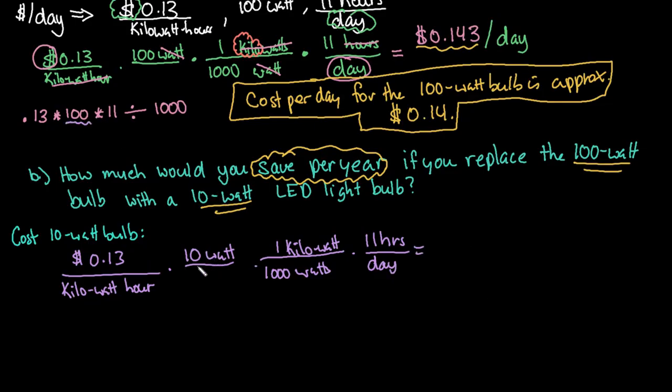And basically the only thing that's going to change when I plug it in is I'm going to use 10 instead. So we can see that our kilowatts cancel out, our hours cancel out, and our watts cancel out. So we're left with the price per day. So if I do my calculations, it's 0.0143. We could have also recognized that a 10-watt bulb is one-tenth of the cost, or it uses one-tenth of the energy of a 100-watt bulb. So it's going to be one-tenth of the cost. So I could have also just taken this 0.143 and divided it by 10. That would have also given me the same answer.